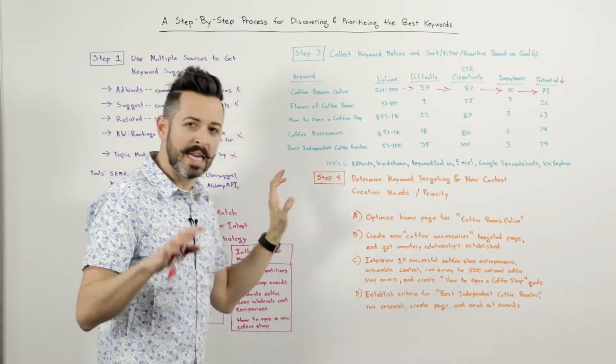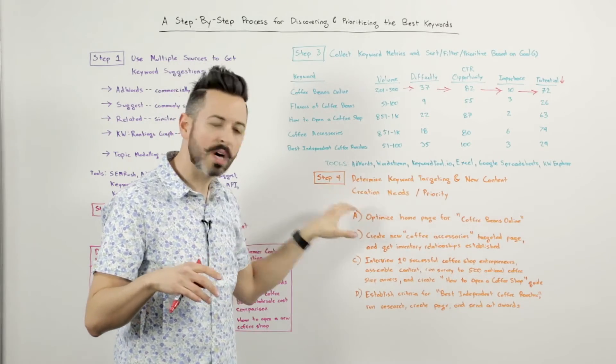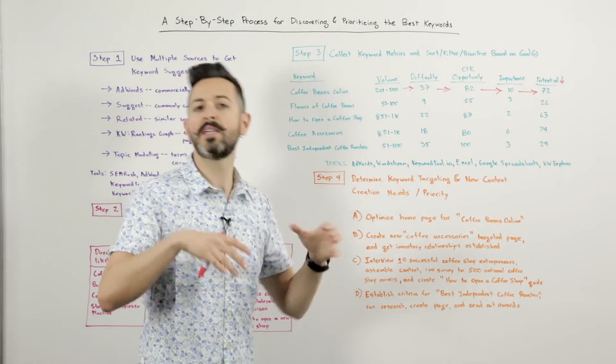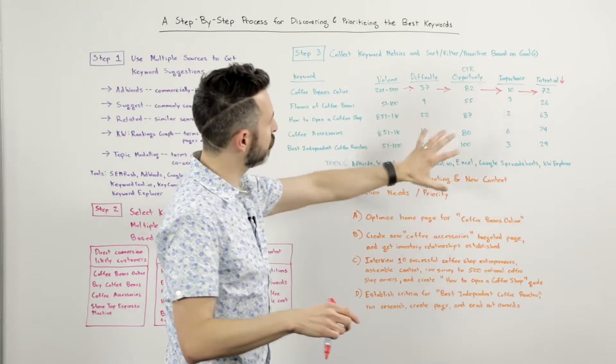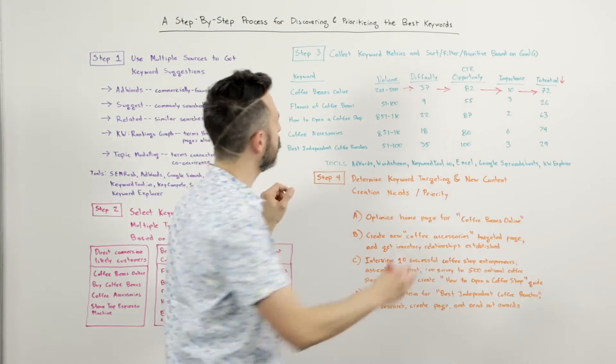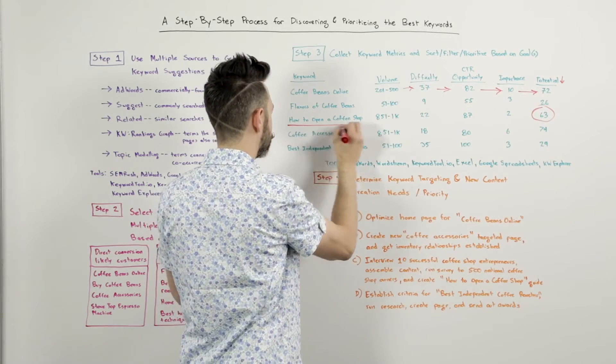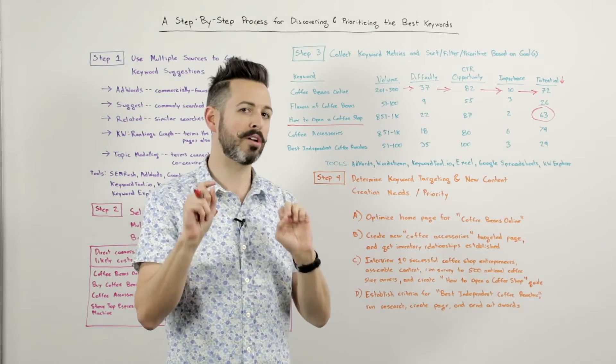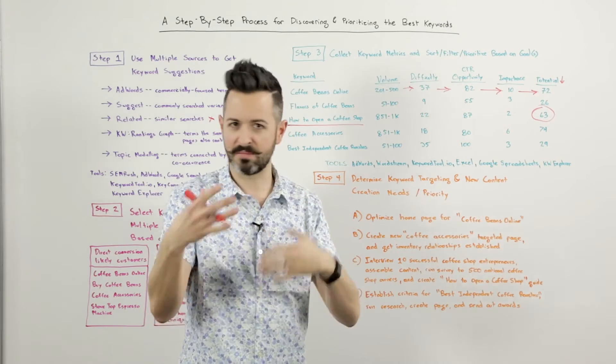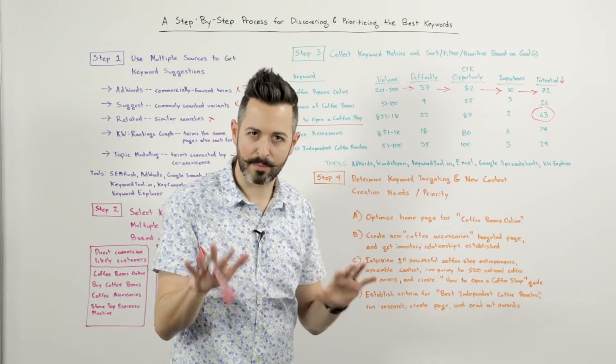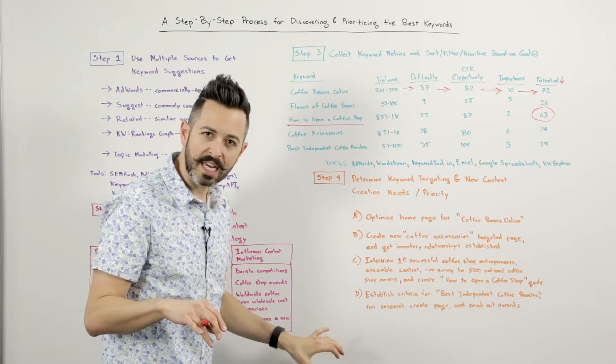Step four, now what I want to do is I want to determine my keyword targeting and my new content creation needs and the priority of those processes. So after I look at this, I might refactor a few things and say, wow, you know what? That is pretty strong. Even though I set it as a low importance, I'm kind of interested. I'm more interested in this how to open a coffee shop than I was previously based on the metrics that I saw there, the opportunity I think I've got. And so here's my prioritized list.